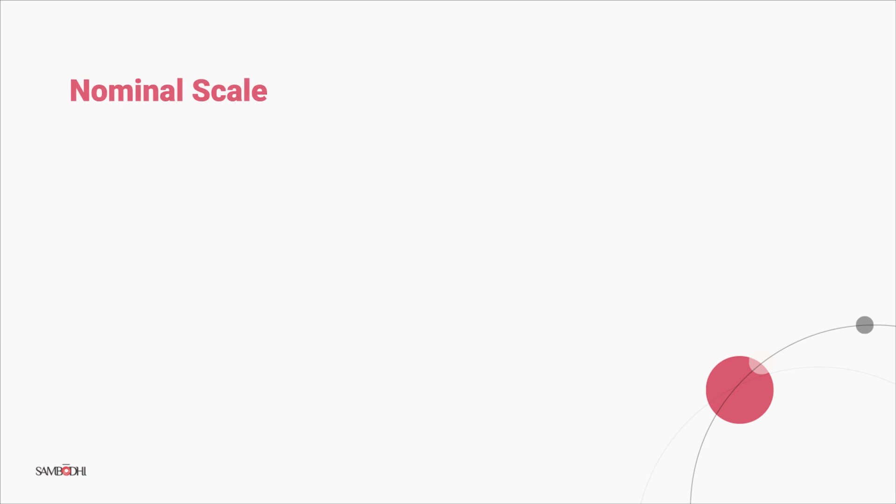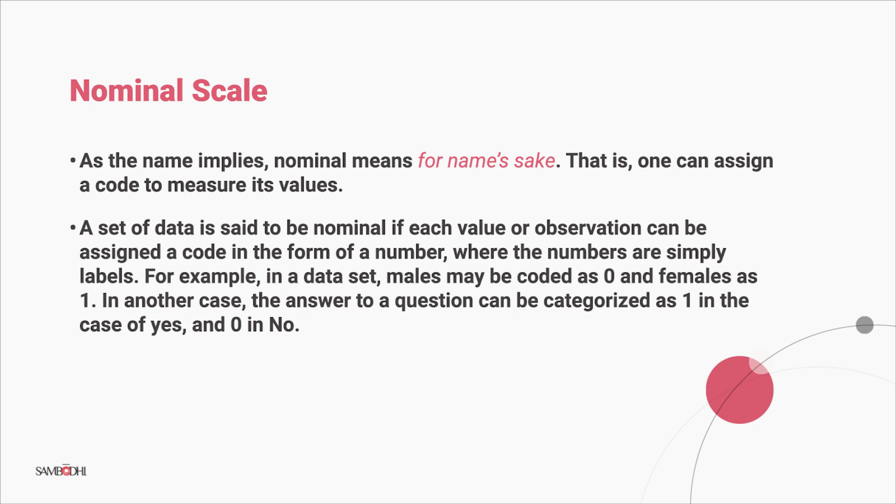First up is the nominal scale. As the name implies, one can assign a code to measure its values. A data set is said to be nominal if each value or observation can be assigned a code in the form of a number, where the numbers are simply labels. For example, in a data set, males may be coded as 0 and females as 1. In another case, the answer to a question can be categorized as 1 in the case of yes and 0 in the case of no.